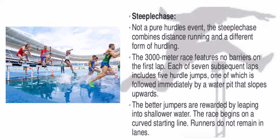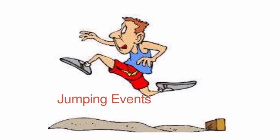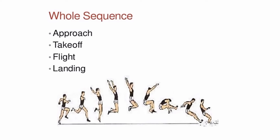The steeplechase is not a pure hurdle event — it combines distance running with a different form of hurdling. In the 3000-meter steeplechase, there are no barriers on the first lap. Each of the seven subsequent laps includes five hurdle jumps, one of which is followed immediately by a water pit that slopes upward. Better jumpers are rewarded by leaping into shallower water. The race begins on a curved starting line, but runners do not remain in their lane.